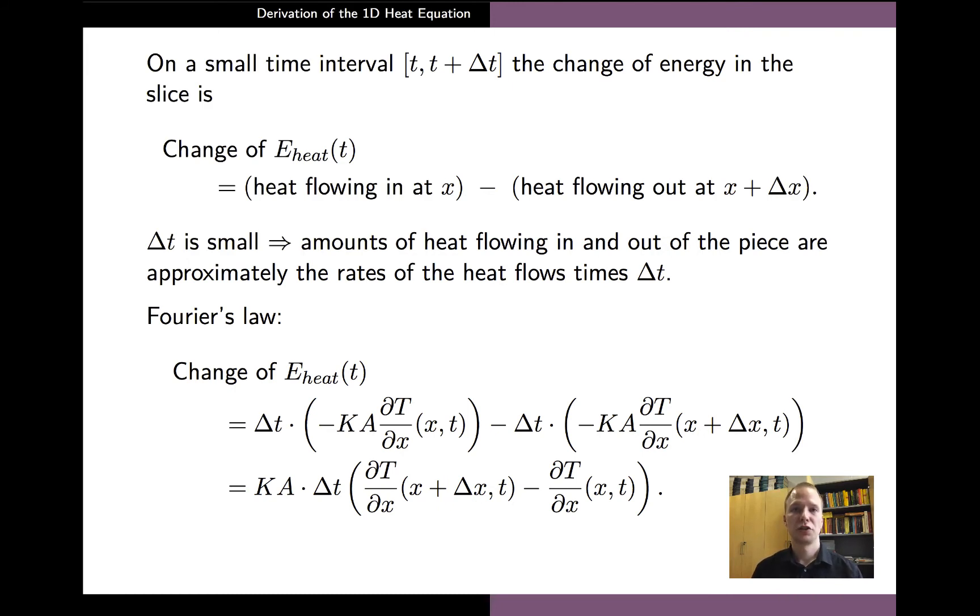And if we now consider the change of the energy of the slice, this is given by the heat energy flowing through the boundary at x minus the heat energy flowing out of the slice at x plus delta x. And if we consider the change of energy over a small time interval of length delta t, then the amount of heat flowing through these boundaries are approximately the rates of the heat flows times delta t. And in addition, the heat flows can be expressed using the derivatives of the temperature with respect to the spatial variable at x and at x plus delta x. And finally simplifying the formulas, we arrive at the expression on the last line which gives us the change of the energy of the slice over the time interval of length delta t.